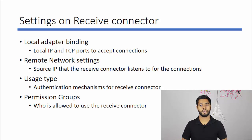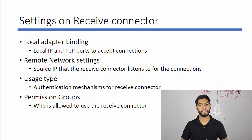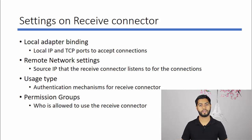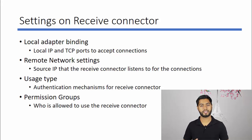The second setting is remote network settings. Here you can configure the source IP address for incoming connections. For example, if you have a scanner which uses your Exchange Server to send email, you can configure the IP address of the scanner in the receive connector — that way the receive connector will listen to that specific IP only. The other settings are authentication mechanism and permission group, which we will discuss in detail during the demonstration.